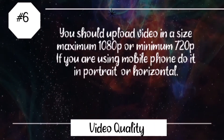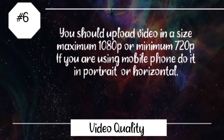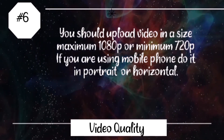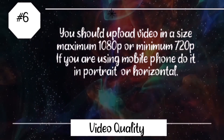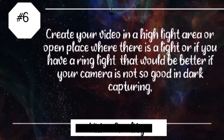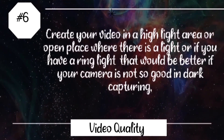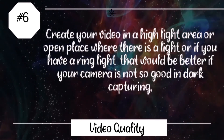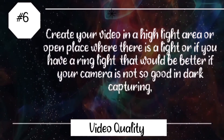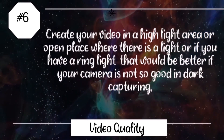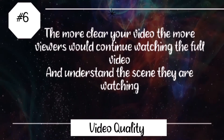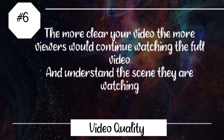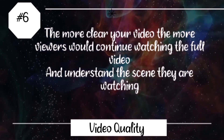When you upload a video, the size should be a maximum of 1080p or a minimum of 720p. If you're using a mobile phone, shoot in portrait or horizontal orientation. Create your video in a well-lit area or open place. If you have a ring light, that would be better. The more clear your video, the more viewers will continue watching the full video and understand what they are watching.